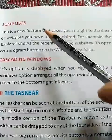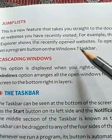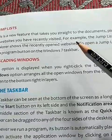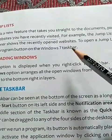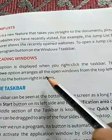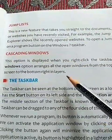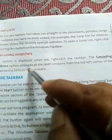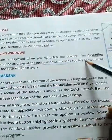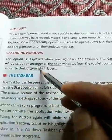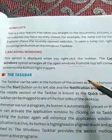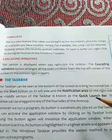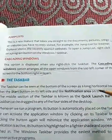The next feature is the jump list, which is a newly added feature that shows you recently visited websites. The next is cascading — all open windows are arranged from the top left corner of the screen to the bottom right. This means many windows can be open at the same time and can be easily accessed.